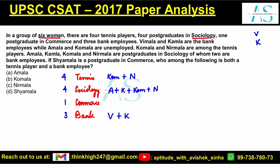Two more people will be added to tennis, and one more member needs to be added to bank. Among the sociology graduates, two of which are also bank employees — this is a very important line. There are three total bank employees. Now Amala and Komala are unemployed, meaning they are not currently working and cannot be part of any organization like a bank — they cannot be bank employees.